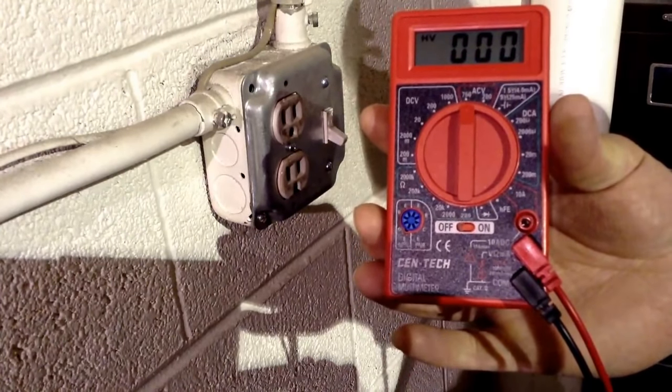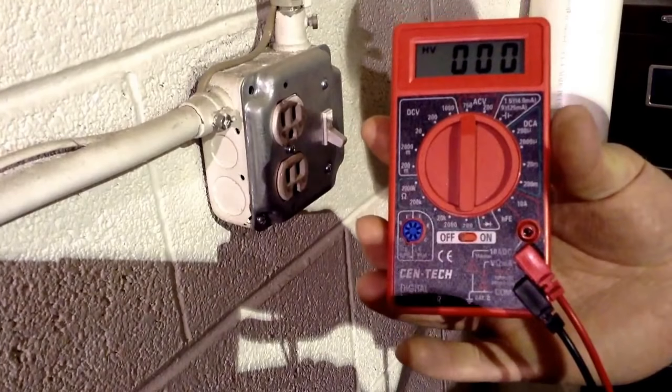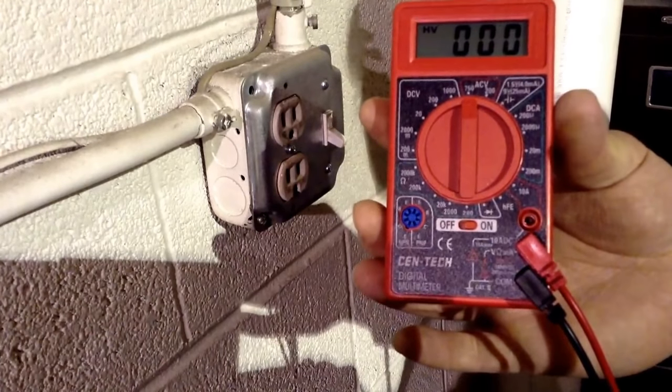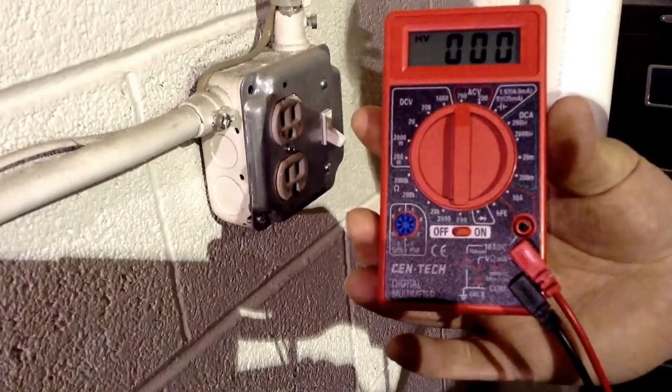To do this, you need to make sure that your meter is set to 750 ACV, which stands for 750 alternating current volts.